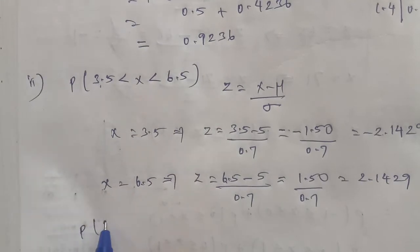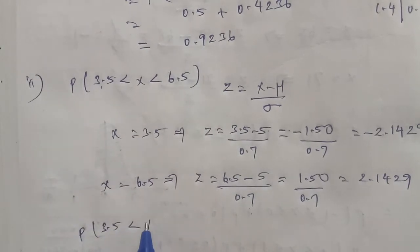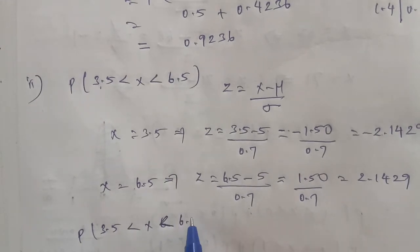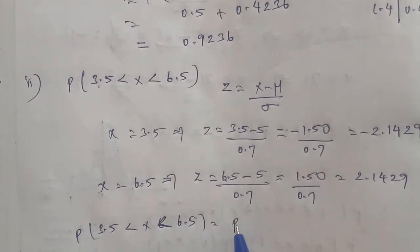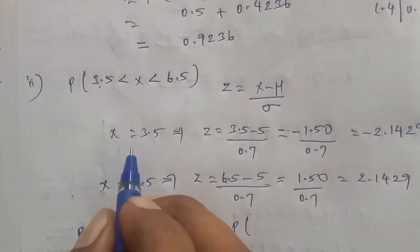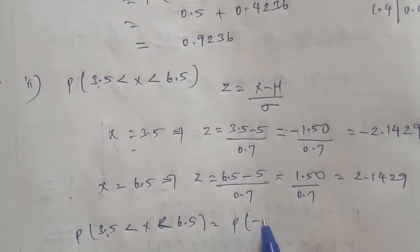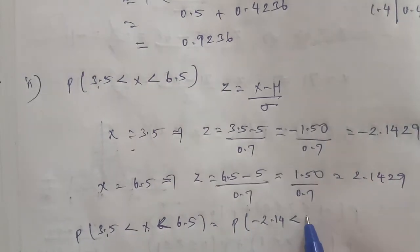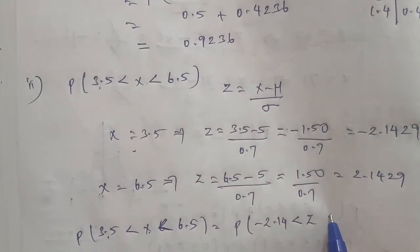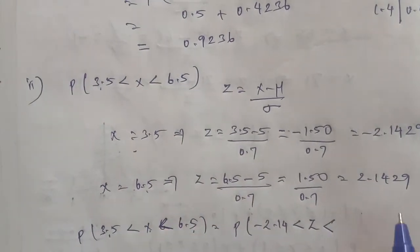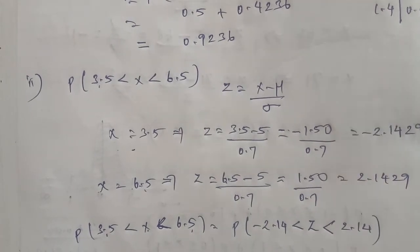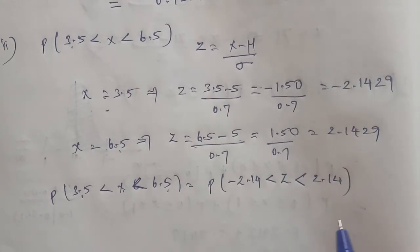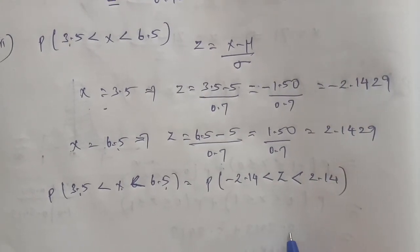P(3.5 < X < 6.5) equals P(Z = -2.14 < Z < 2.14). This gives us the answer for the distribution. The normal distribution graph is a bell-shaped curve.